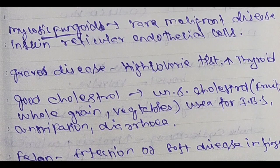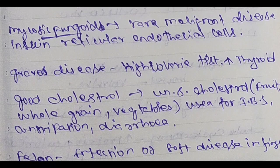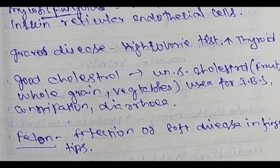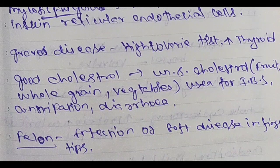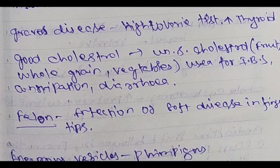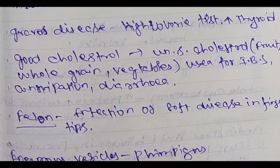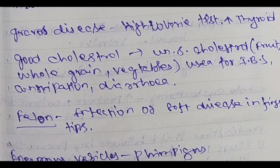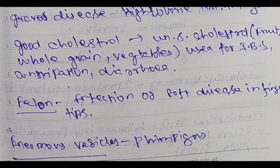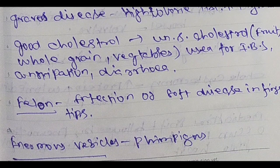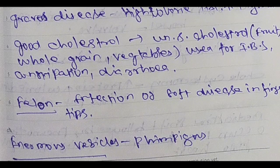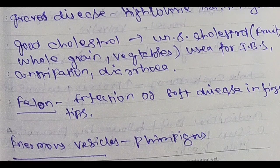Graves' disease — high calorie diet. So hyperthyroid — high calorie. Used for irritable bowel syndrome: constipation, diarrhea. Good cholesterol is unsaturated cholesterol. It is available in fruits, whole grain, and vegetables.